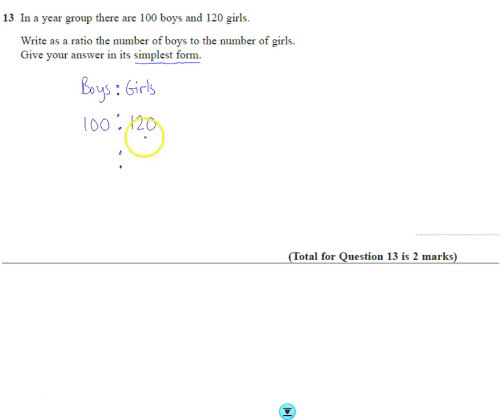So basically it's a bit like simplifying a fraction. I'm just going to divide both things by, in this case I'm going to divide by 10, so I'm going to divide both numbers by 10, so I'm going to get 10 to 12.